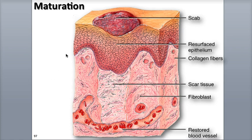In the final maturation phase, the epidermis is back to its normal thickness, damaged blood vessels are fully restored, and the scab is shed.